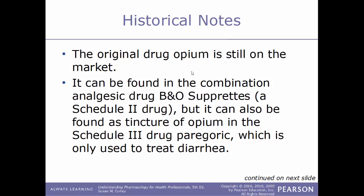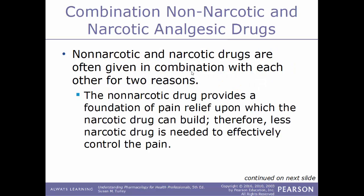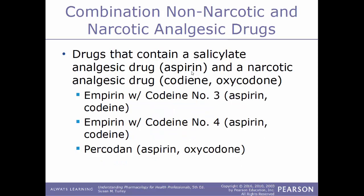Paregoric is used only to treat diarrhea. Because a common side effect of all narcotic drugs is constipation, paregoric uses that side effect as a therapeutic effect to treat diarrhea. Non-narcotics and narcotics are often given in combination for two main reasons: the non-narcotic drug provides a foundation of pain relief upon which the narcotic can build, so less narcotic is needed to effectively control pain. Second, the therapeutic actions of this combination treat the two components of pain — the pain from the stimulation of nerve endings and the pain that is heightened by anxiety.